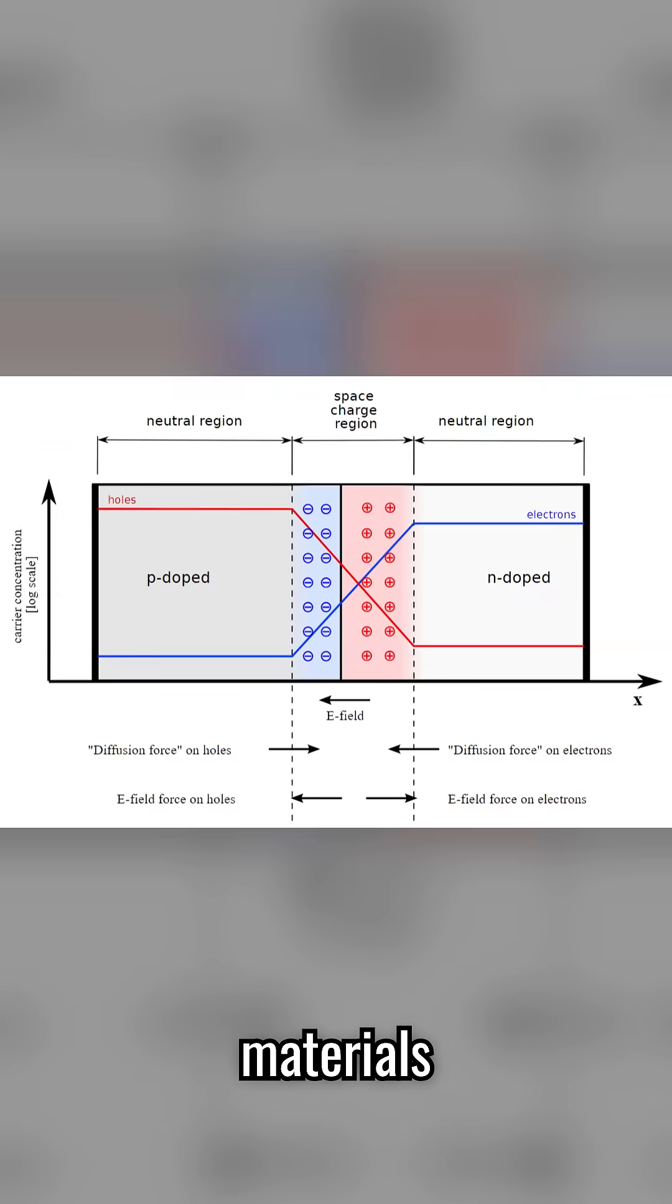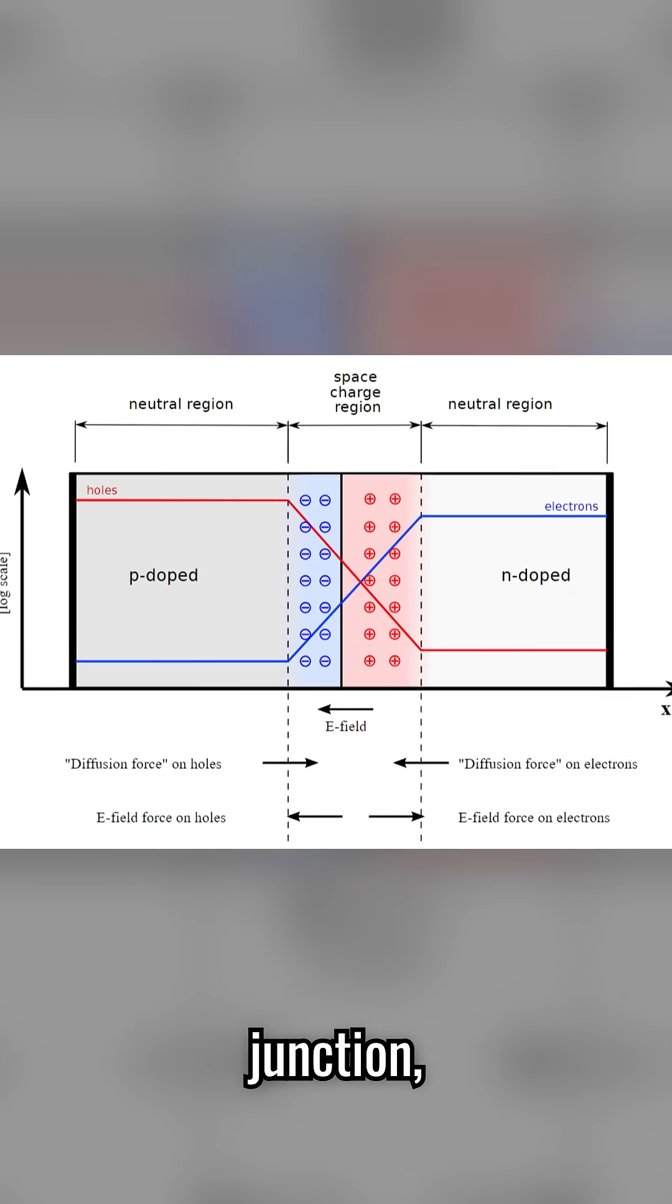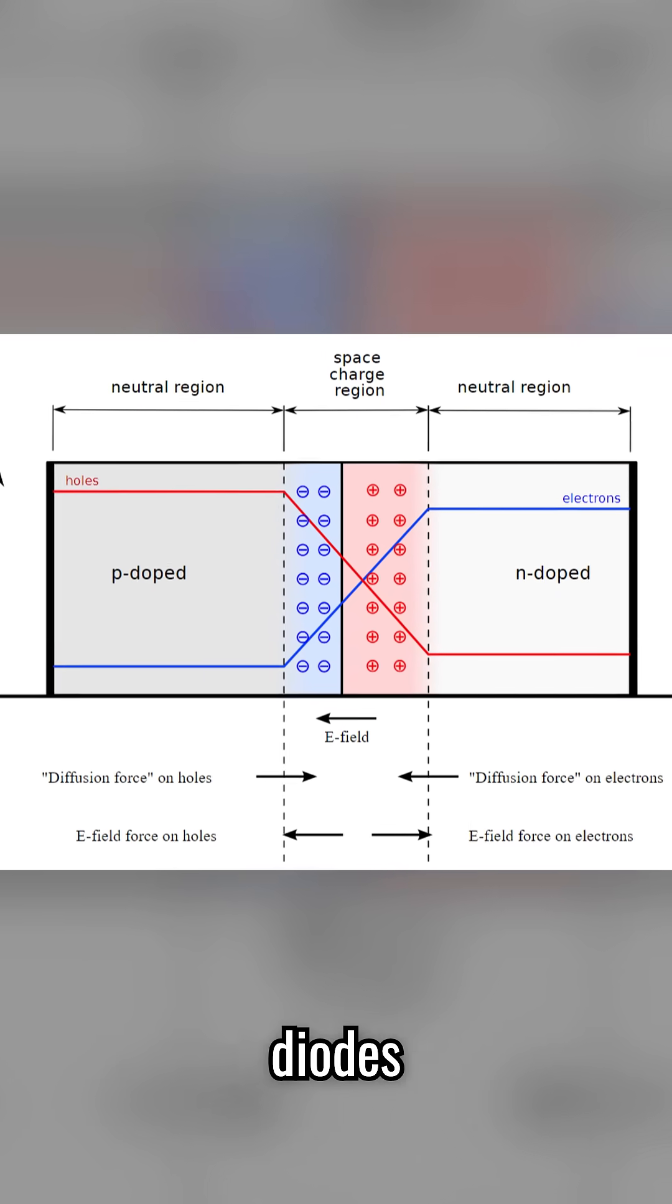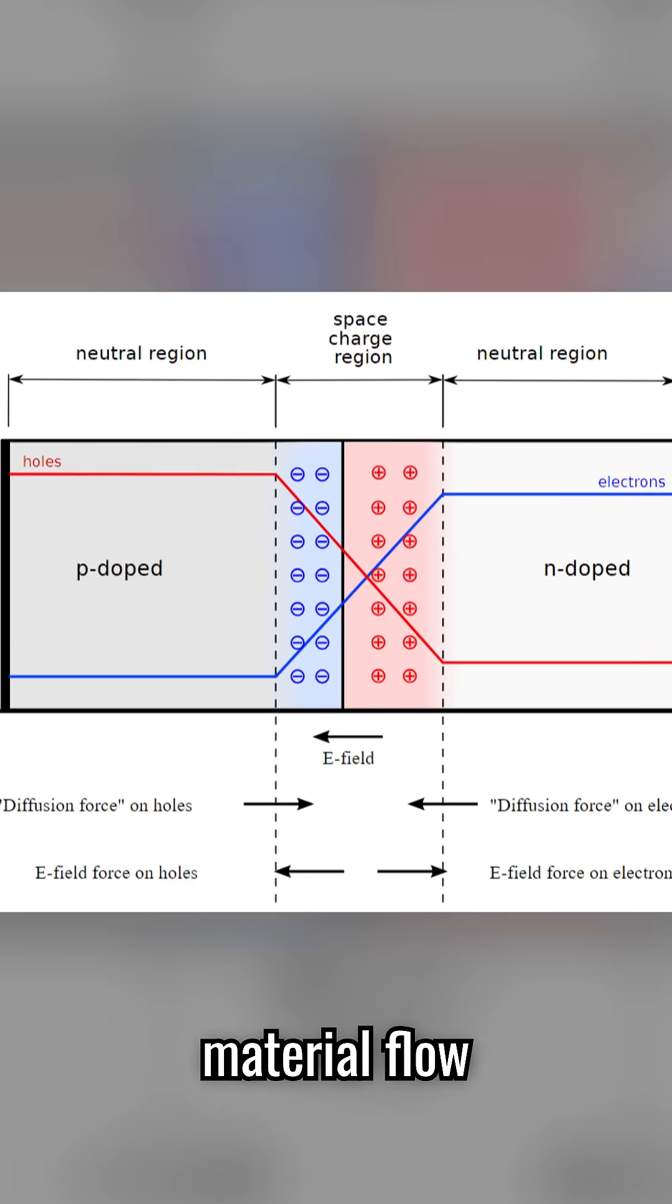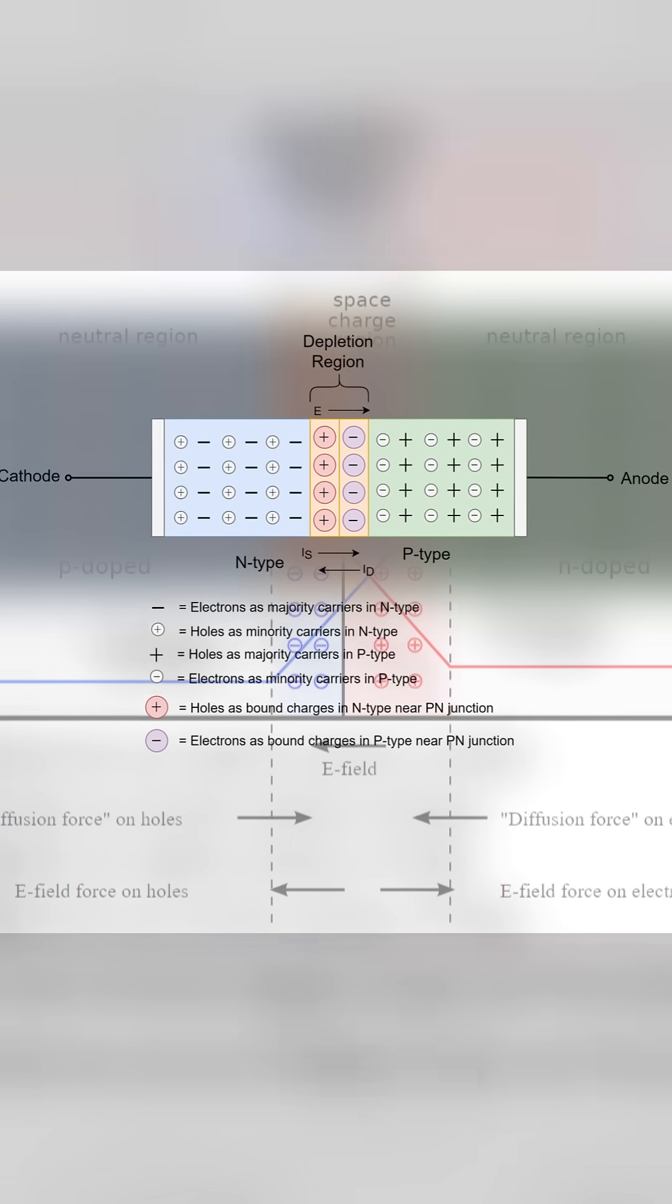When these two types of materials meet, they form a p-n junction, which is the key to how diodes operate. At this junction, the free electrons from the n-type material flow toward the p-type material, filling the holes.